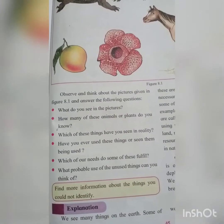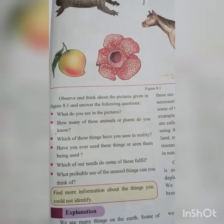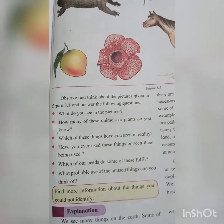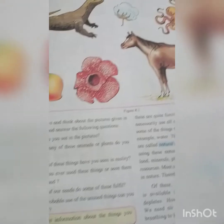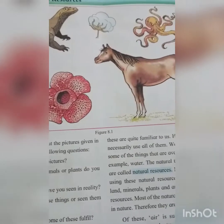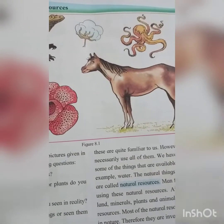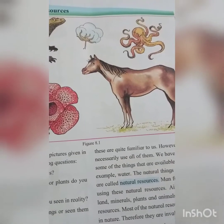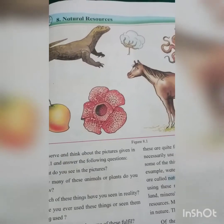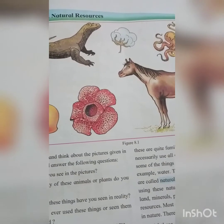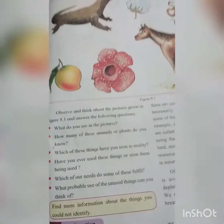The next question is about the probable use of unused things. In the picture, octopus can be kept in an aquarium, and lizard can be kept in the garden to eat tiny insects.